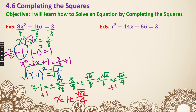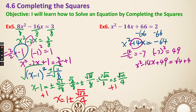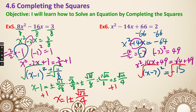Next example: subtract 66 from both sides — actually there's nothing to divide, so we have x squared minus 14x equals negative 64. The middle coefficient is negative 14, divided by 2 gives negative 7, squared gives 49. So x squared minus 14x plus 49 equals negative 64 plus 49, which is x minus 7, squared, equals negative 15. Taking the square root of both sides with a negative inside, we get i. Final answer: x equals 7 plus or minus i times square root of 15.